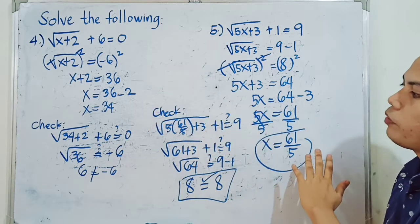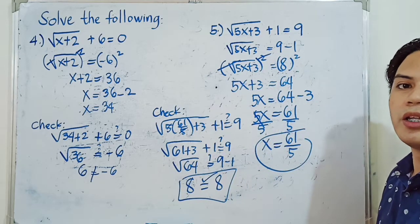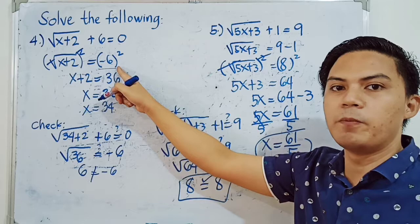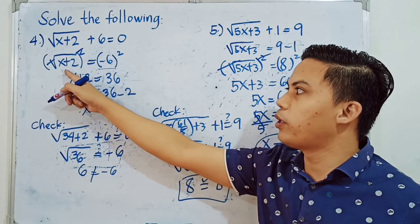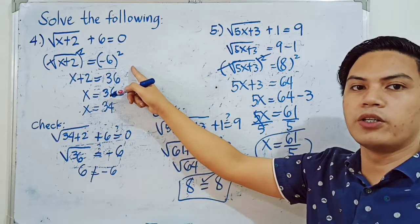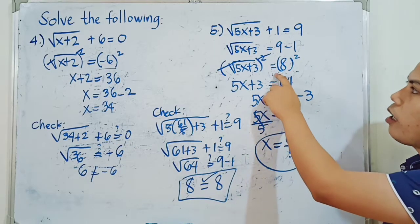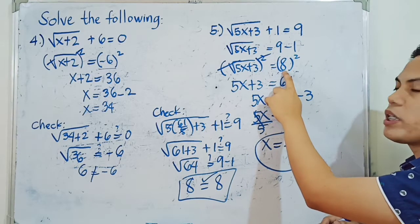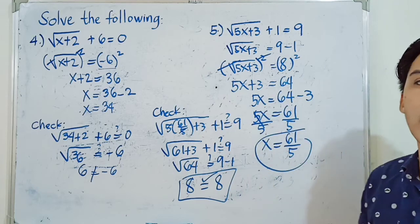Notice the difference between example 4 and example 5. In example 4, we got an extraneous root, while in example 5 we got a valid solution. When you transpose the constant term and end up with a negative value on the right side of the radical equation, it is impossible to find a real square root — that means there is no solution. When the right side remains positive after transposing, a valid solution exists.